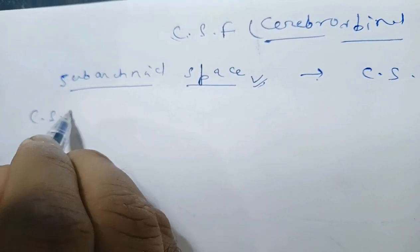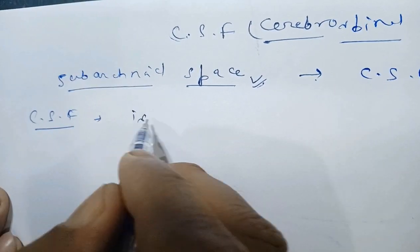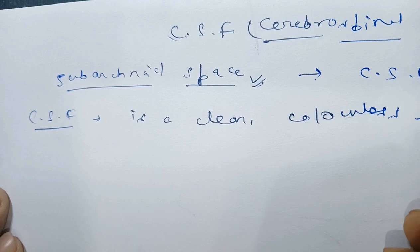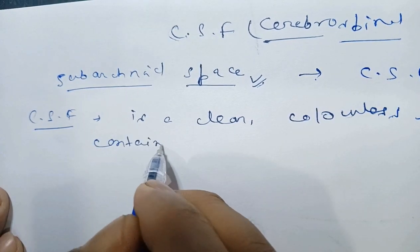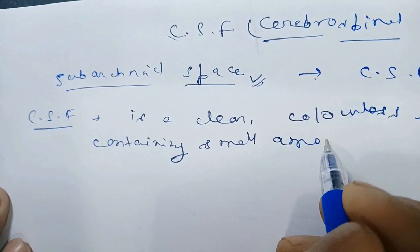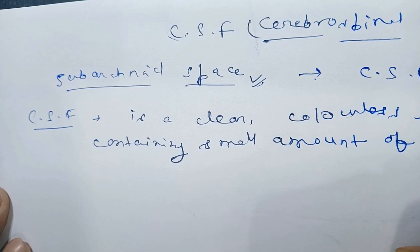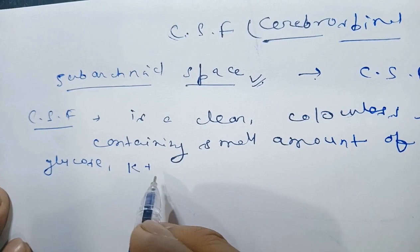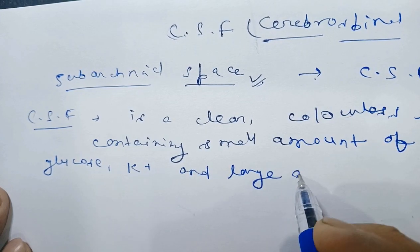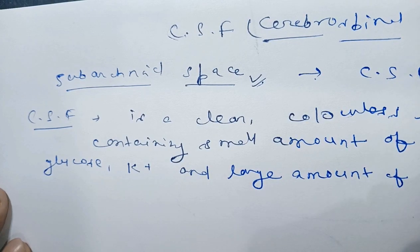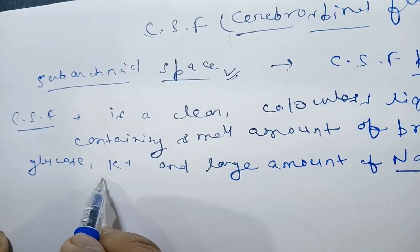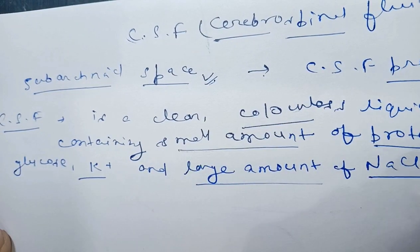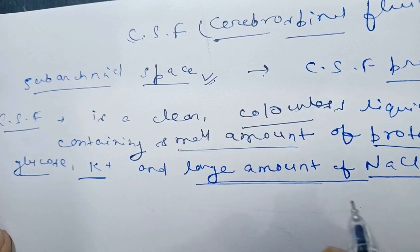How can we define the CSF? It is a clear and colorless liquid containing a small amount of protein, glucose, and potassium, and a large amount of sodium chloride.